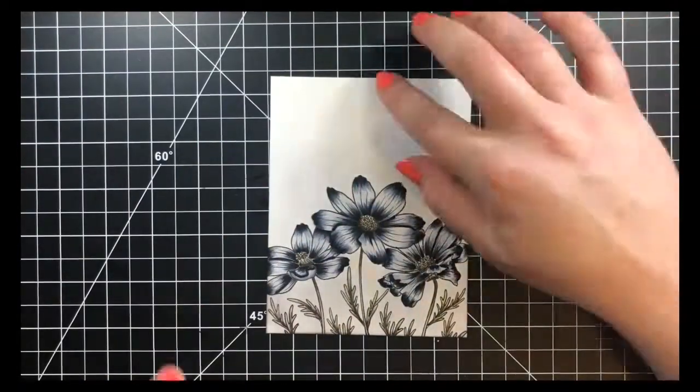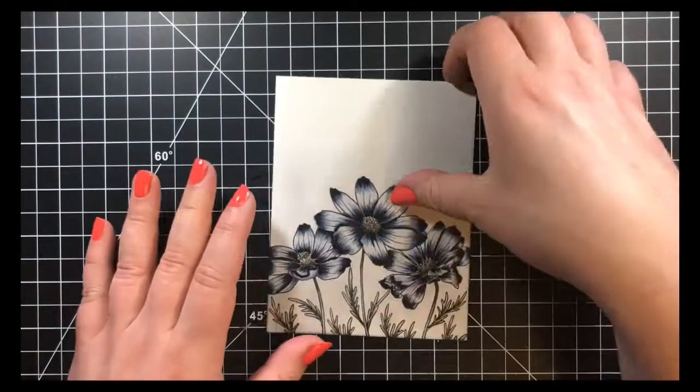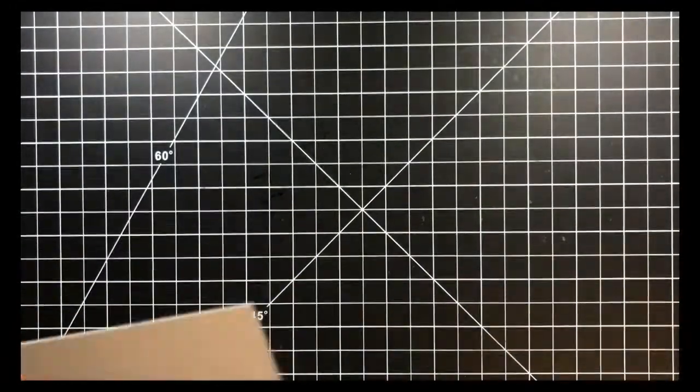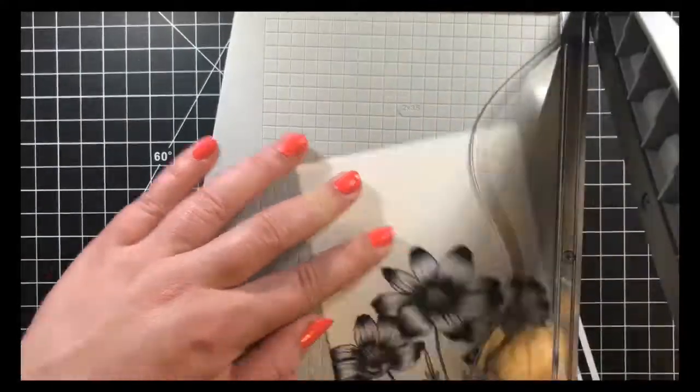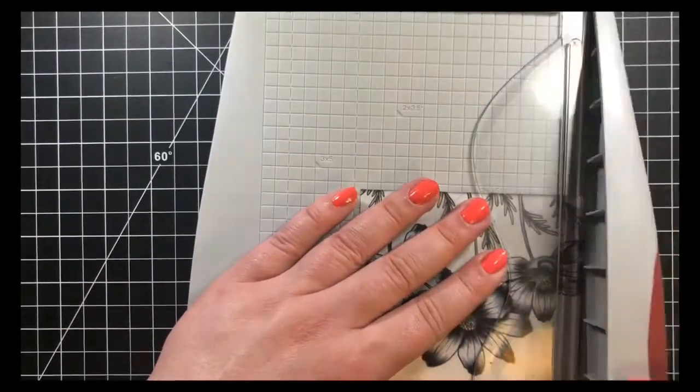Then I did go ahead and trim down this panel just a little bit. I'll be using a black A2 size card base, so I did want a little bit of a border.